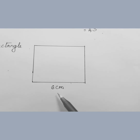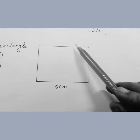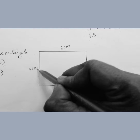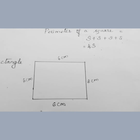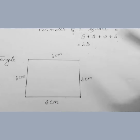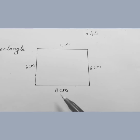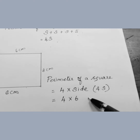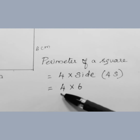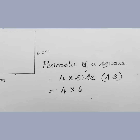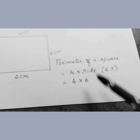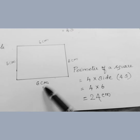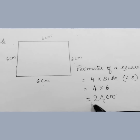Here, the square is given with a side of 6 centimeters, and since all sides are equal, each side is 6 centimeters. The perimeter of a square is 4 times S, that is 4 times 6, which equals 24 centimeters. You can also check your answer by adding 6 four times — you will get the same answer.